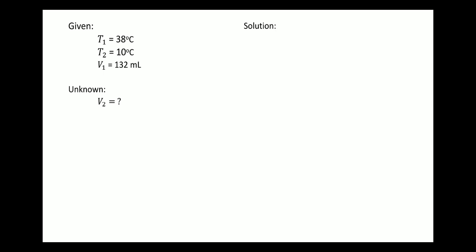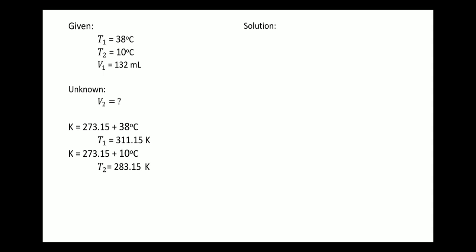The first step is to convert degrees Celsius to Kelvin. To convert Celsius to Kelvin, we add the Celsius value to 273.15. So for T1, 38 plus 273.15 is equal to 311.15 Kelvin. And for T2, 273.15 plus 10 degrees Celsius is equal to 283.15 Kelvin.